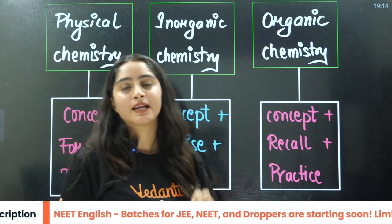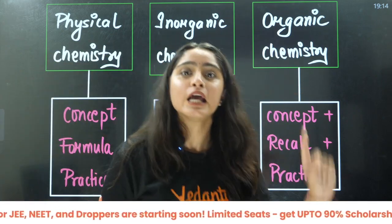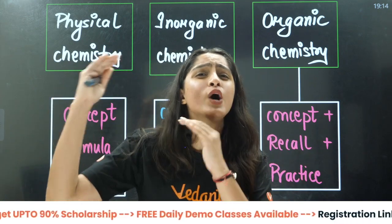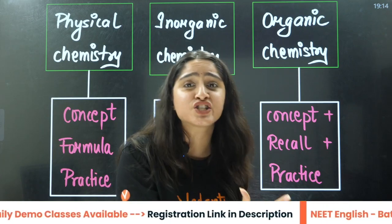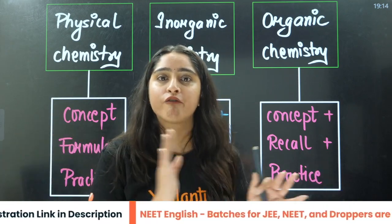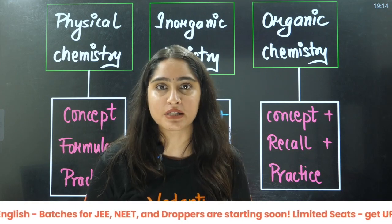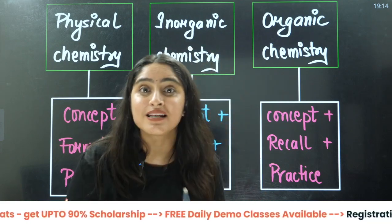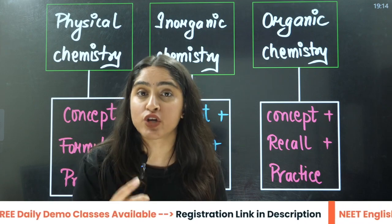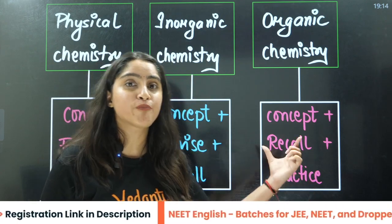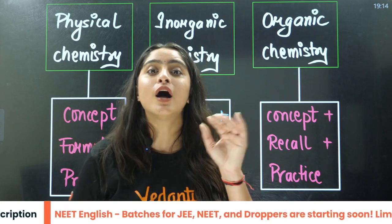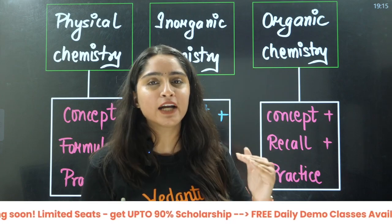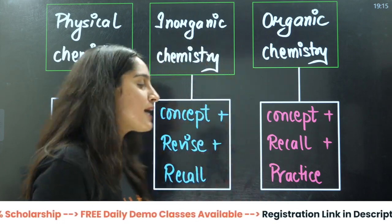Organic chemistry is actually a mixture of both. Firstly you need concept clarity, then you need to recall reactions — what is the reagent, which reagent is used where. You need to know the application of reagents. But you also need to understand how the mechanism works, how General Organic Chemistry works. For that, you need to do a lot of practice with easy, moderate, and difficult types of questions.